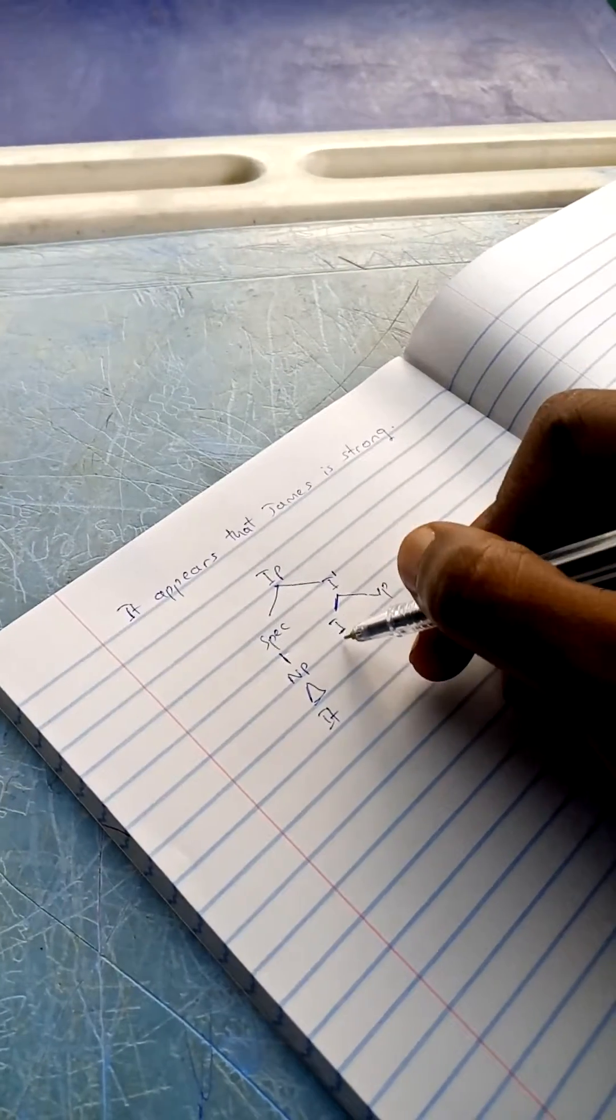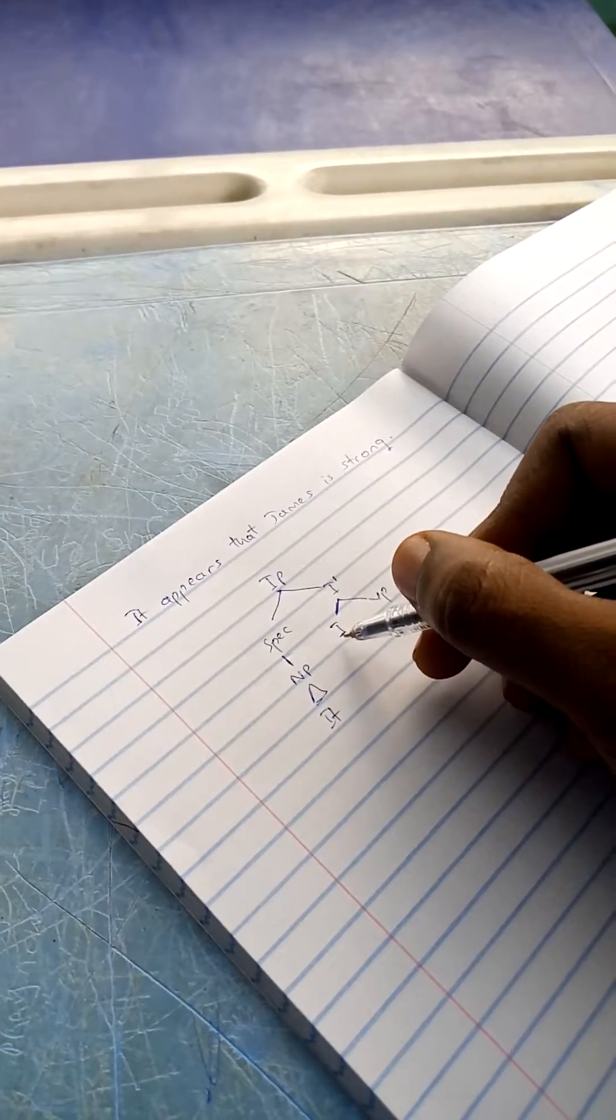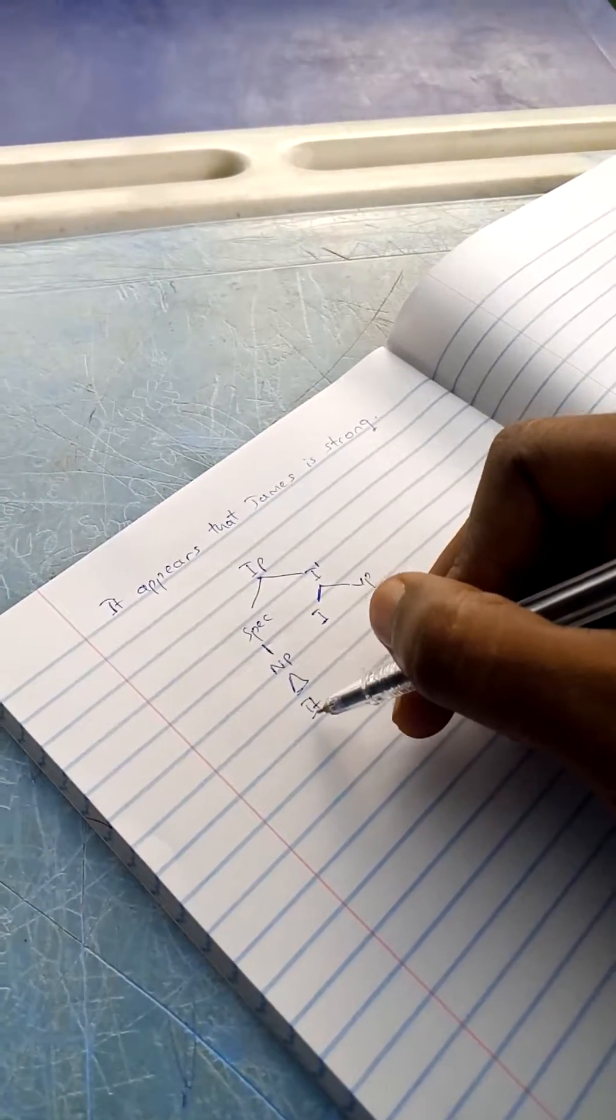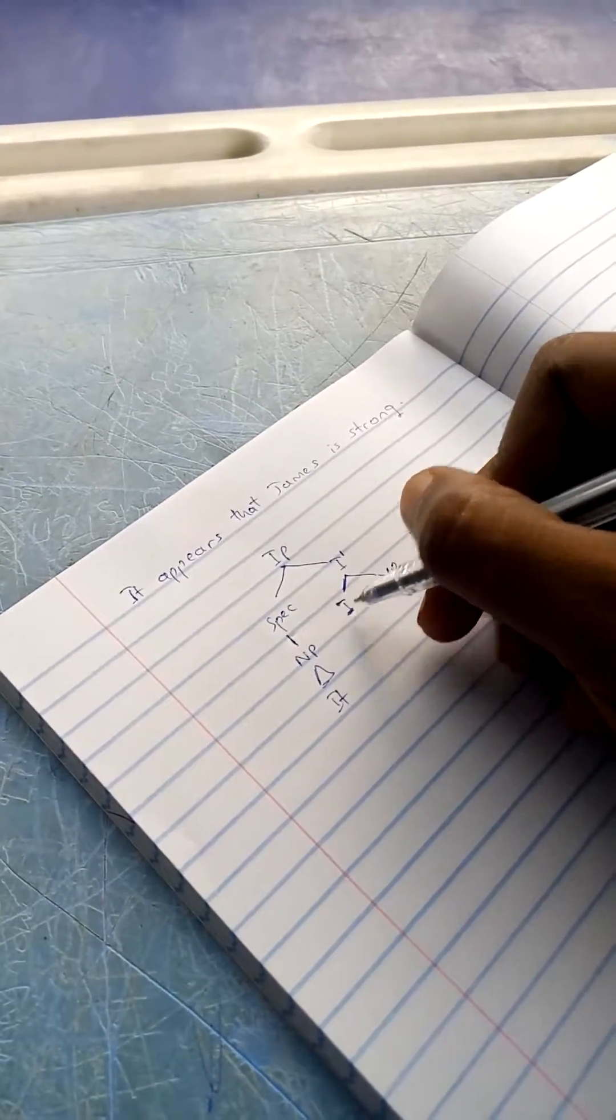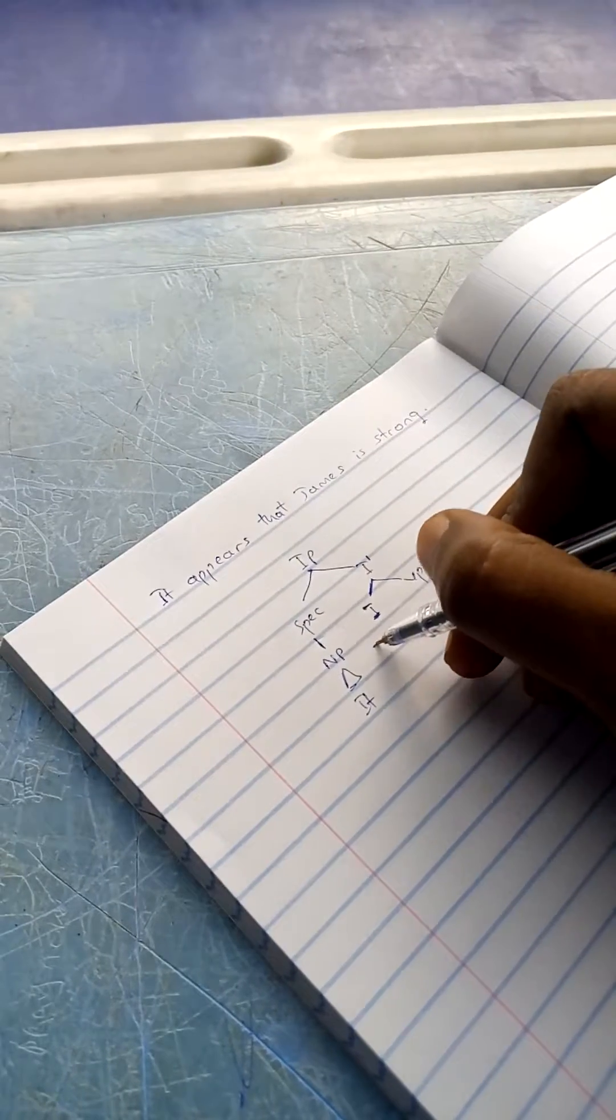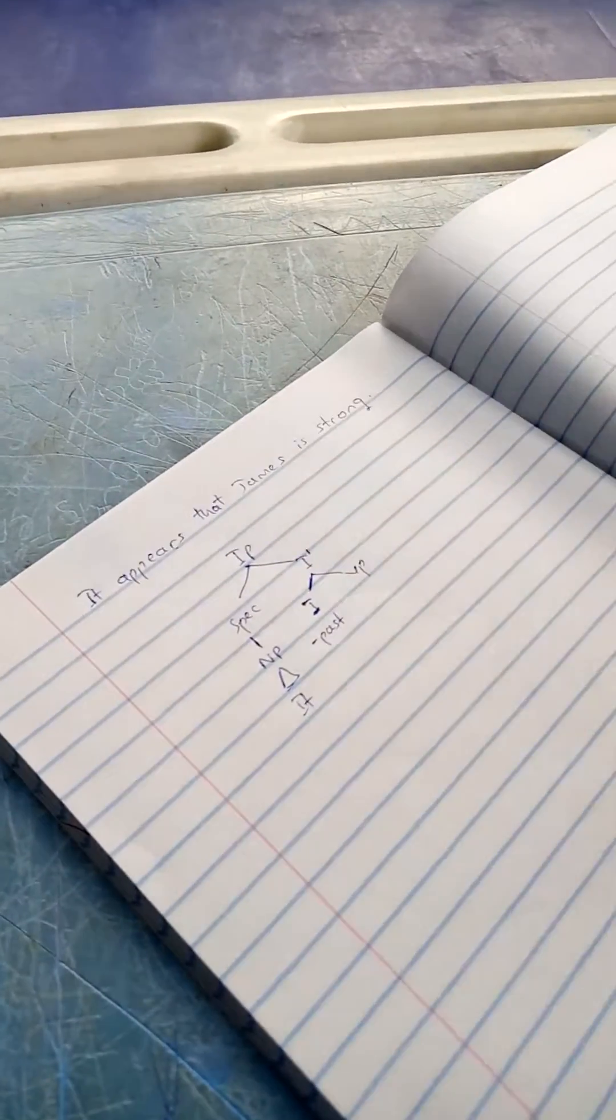The inflection is what assigns case to this 'it'. This is an expletive 'it' - I'll talk about this in another video. You have the inflection I, and this is minus past because the verb 'appears' is in the present form.